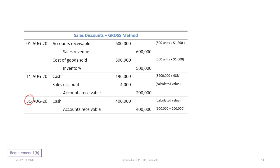The last journal entry on August 31st records the collection of the remaining receivable. The receivable balance is the original $600,000 minus the $200,000 collected in the discount period, leaving $400,000. Cash is debited, accounts receivable is credited for $400,000, and the sale is completely dealt with.